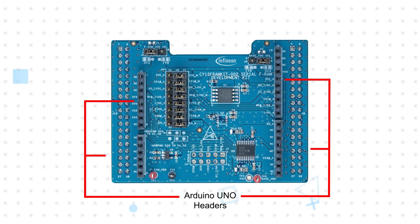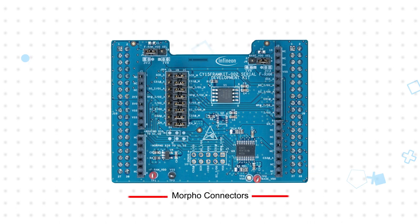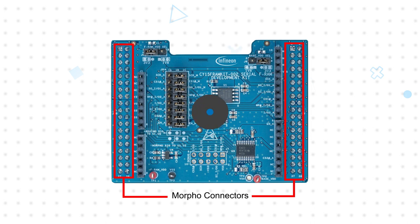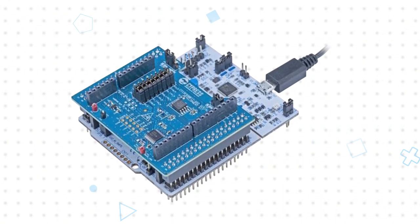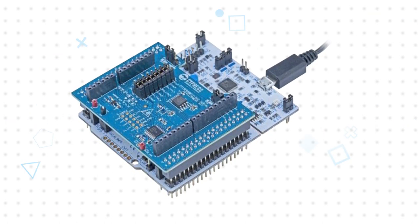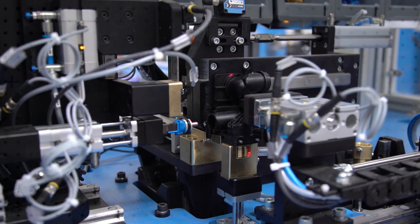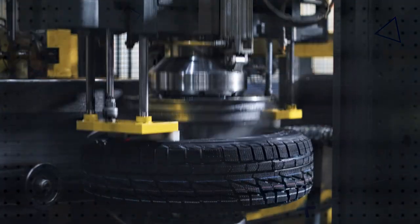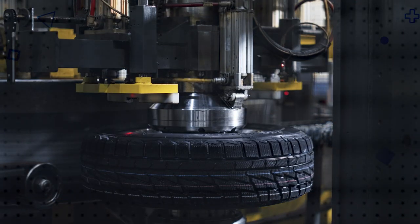It has Arduino Uno-compatible connectors for evaluation of the SPI mode operation with a wide range of boards, and Morpho headers for Quad SPI mode operation with the STNucleo L433 RCP MCU Evaluation Board. An example project for that board is available for evaluation of both standard SPI and QSPI operation, geared towards leveraging Infineon's Excelon FRAM for mission-critical data logging in industrial and automotive systems in real-time.